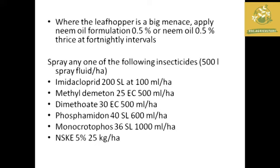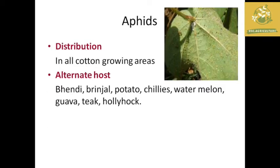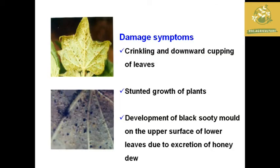The next pest is aphids, found in all cotton growing areas. Some alternative hosts are bhendi, brinjal, potato, chilies, watermelon, guar, teak and hollyhock. The major damaging symptom is crinkling and downward cupping of the leaves.